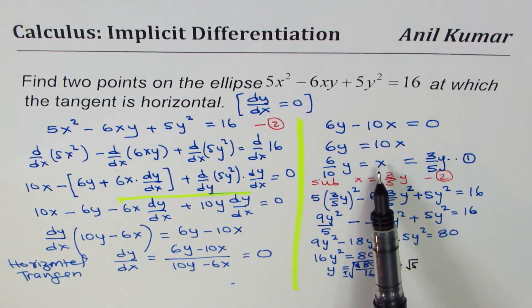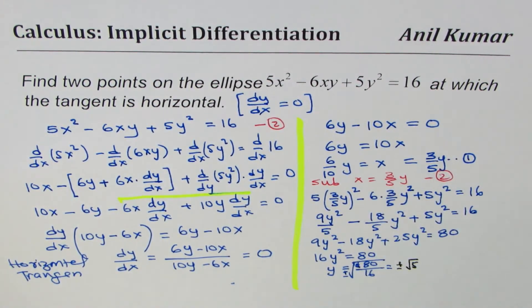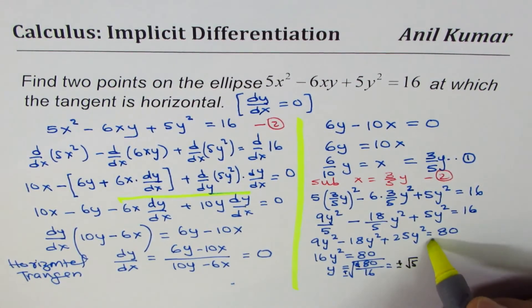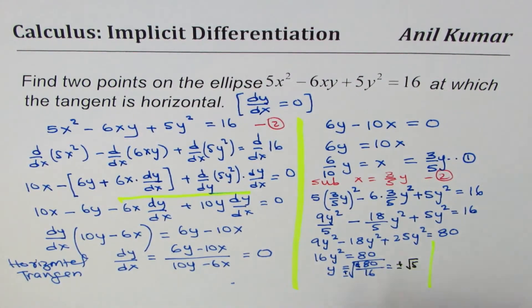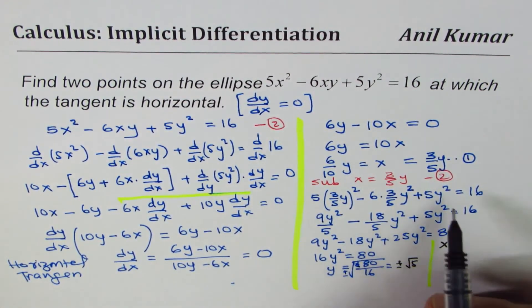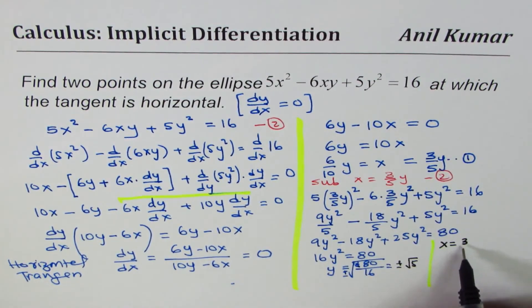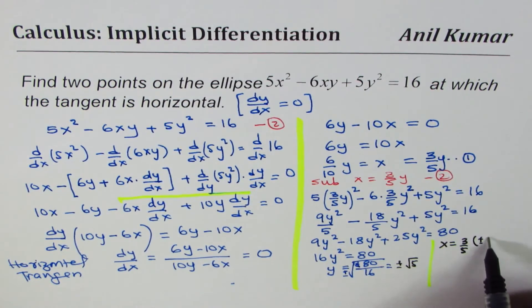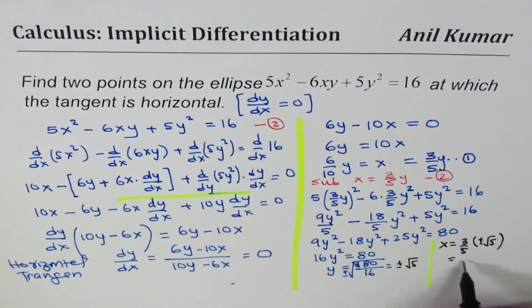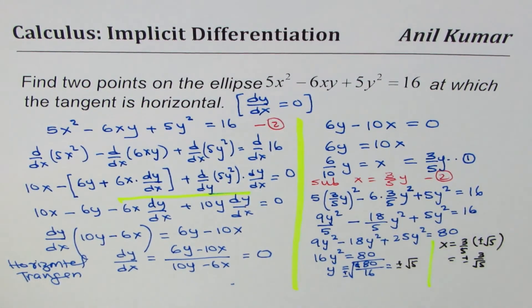We can find the value of x. So x is equals to 3 over 5 of plus minus square root of 5. So that gives us x value of plus minus 3 over square root of 5.